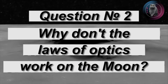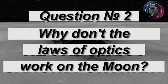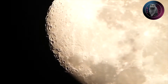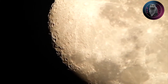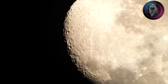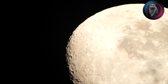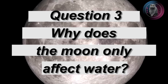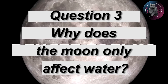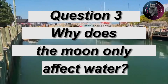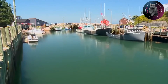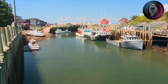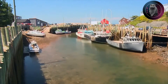Question 2: why doesn't the rule of light and shadow propagation on the surface of circular objects work in the case of a natural earth satellite? And finally, Question 3: why does lunar gravity attract millions of tons of water during high tides but cannot attract dust in the air during the same low tide?